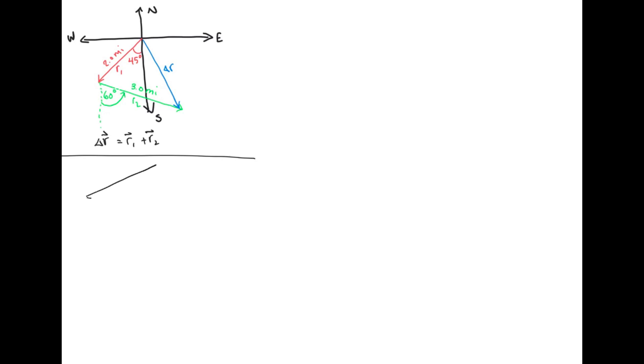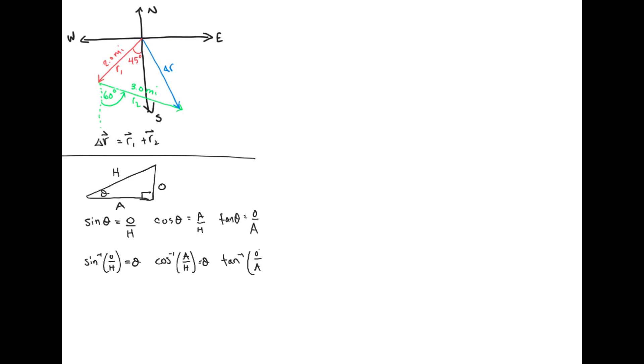We're going to be using the trig functions a lot in this example, so here's a quick trig review. This is a right triangle where I've labeled one of the angles as theta. The side opposite to theta is o, the side adjacent to theta is a, and the hypotenuse is h. If you know the value of one side length and the value of theta, you can use the sine, cosine, and tangent functions to find the lengths of the other sides. The inverse trig functions are good if you know the value of two side lengths and want to find the value of the angle theta. I'm going to use these relationships several times for this example.